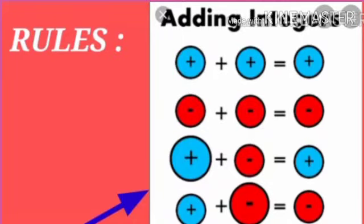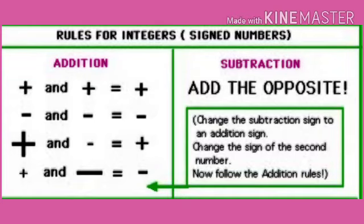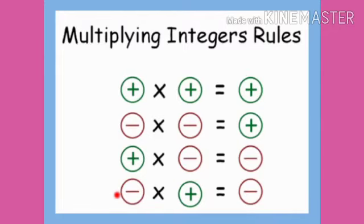Addition of integers: when we add two integers of the same sign, the sum will also be an integer of the same sign. When we add two integers of different sign, the sum will be the difference between the two integers and have the sign of the integer with greater value. Same signs give a positive result; different signs give a negative result. The product of two different integers is always a negative integer, and the product of two same-sign integers is always a positive integer.